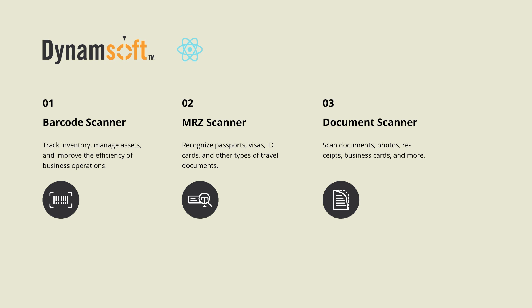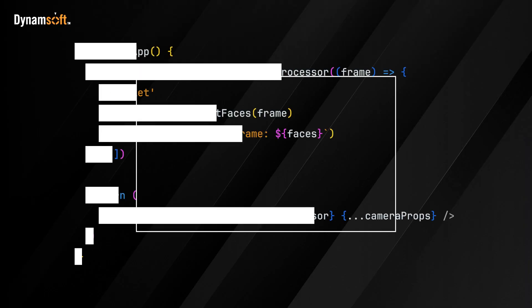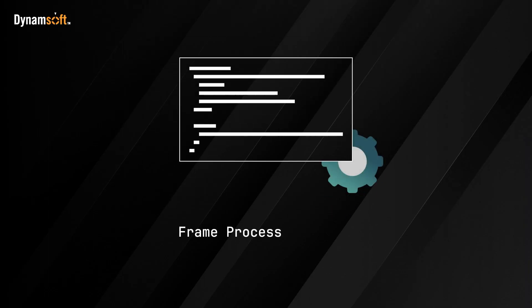In this video, we will delve into the process of creating demo apps using Dynamsoft's Vision SDK and frame processors, focusing on the following: a barcode and QR code scanner, a machine-readable zone scanner, and a document scanner. For each one, we will first create a plugin and then use the plugin to build a demo app.